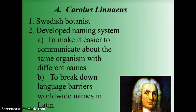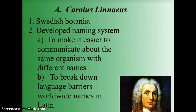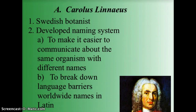The naming system we use comes from a Swedish botanist named Carolus Linnaeus, who developed this naming system to make communication easier. For example, if I'm in the United States talking about a tiger and someone in Japan is using their own language, that would be very confusing. So biologists all use the same naming system, giving each organism a distinct identifier, breaking down language barriers by using Latin.